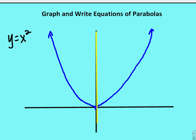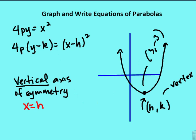Now let's talk about translated parabolas. A translated parabola means the vertex is shifted off of the origin. Recall that the equation for determining the focus with the vertex at the origin was 4py is equal to x squared, where p is the distance from the vertex along the axis of symmetry to the focus. Now we're going to add components to the translated parabola equation.